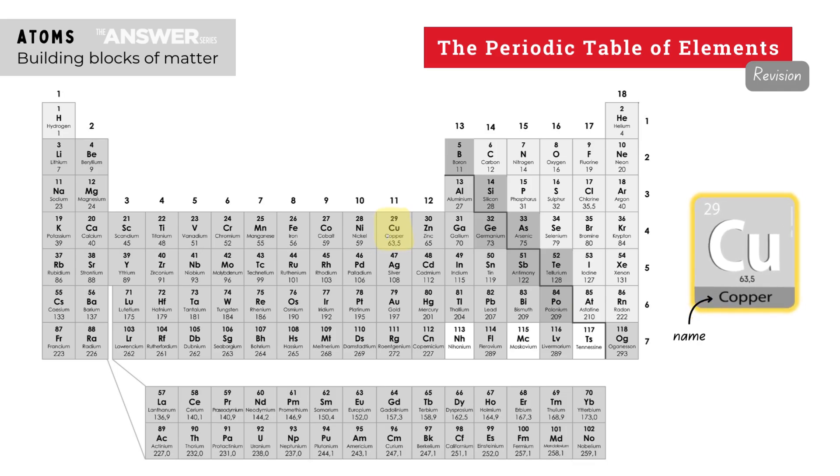The 29th element on the periodic table is copper. Its atomic number is therefore 29, its symbol is an uppercase letter C followed by a lowercase letter U, and its average atomic mass is given as 63.5.